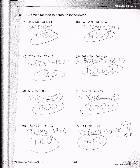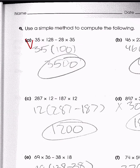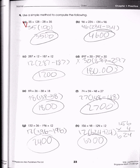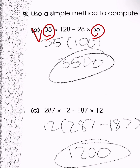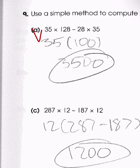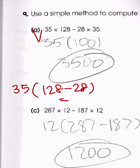Now solving question A — for all other problems, use the same strategy. We see 35 involved in both groups, so we group: 35 times (128 minus 28) = 35 times 100 = 3,500.